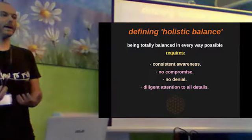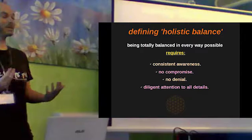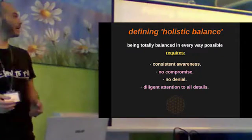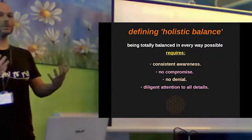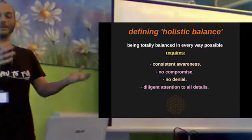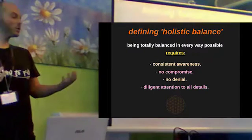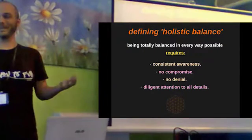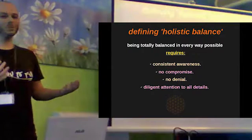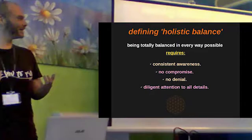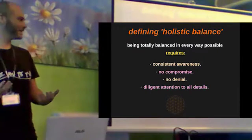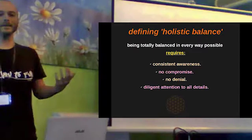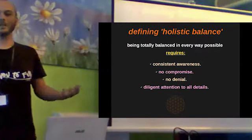To improve on that and actually achieve holistic balance, there are some key points which are necessary — points which people usually don't think so much about. First, consistent awareness: having a consistent understanding of everything that's happening in the system to the best that we can. No compromises: we don't deliberately do not quite as good as we could for convenience. No denial: we aren't blocking out certain things because we think it makes our life easier — in the long term, it will cause problems. And equally, diligent attention to all details, being open-minded and doing our best to understand as much as we can within the team overall.